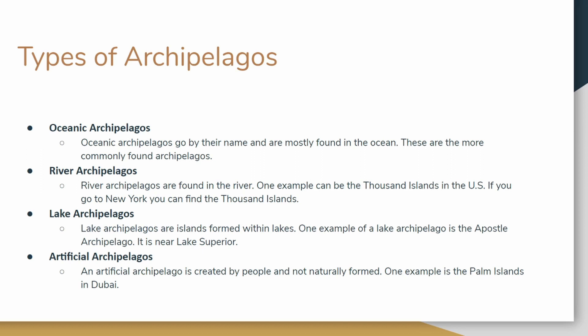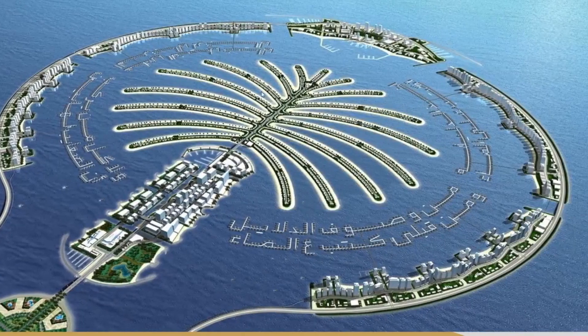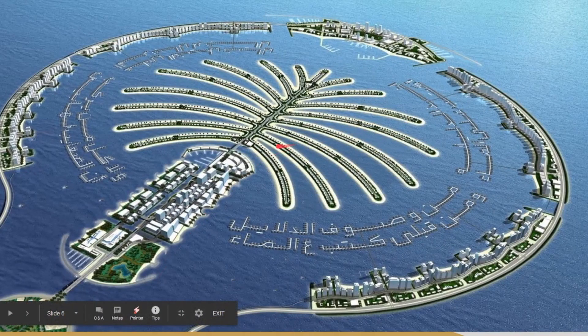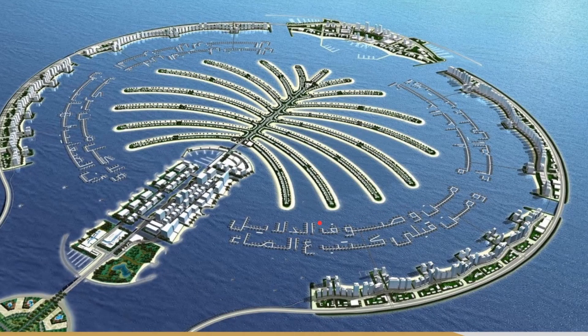The last type of archipelago is an artificial archipelago, meaning it's created by people and not naturally formed like the other three. One example is the Palm Islands in Dubai. Here's a picture of the Palm Islands — you can see all the spread-out islands, and this is artificial. It looks artificial and it is artificial. You guys can see it a lot bigger now with the picture displayed here.